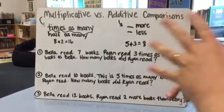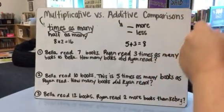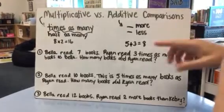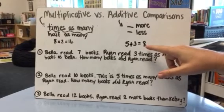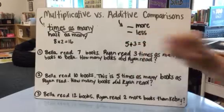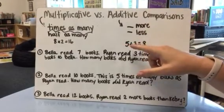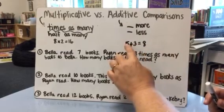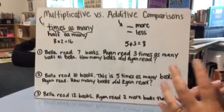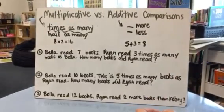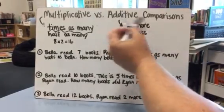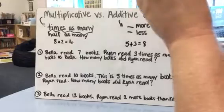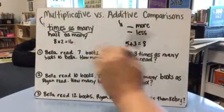Additive comparisons use the operations of addition and subtraction to compare numbers. These are comparisons kids have been doing from kindergarten through third grade — talking about how much more one number is than another or how much less. For example, with 5 + 3 = 8, I can say eight is three more than five, or three is two less than five. No 'times as many' — just how many more or less. Even though you might subtract to solve them, addition and subtraction stick together as additive comparisons.